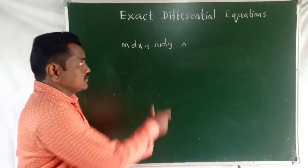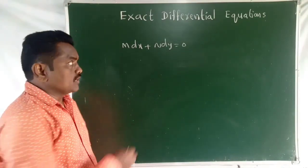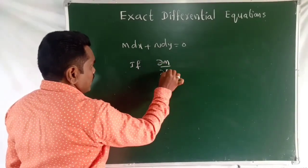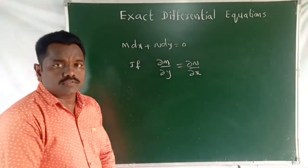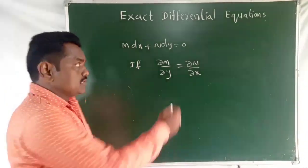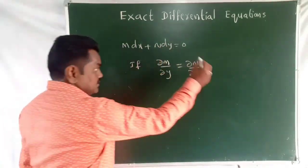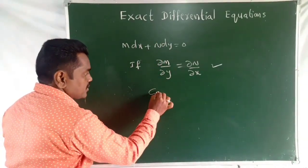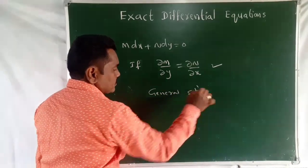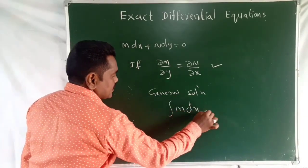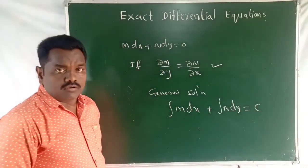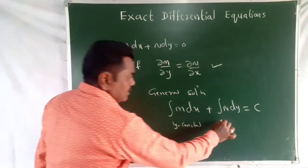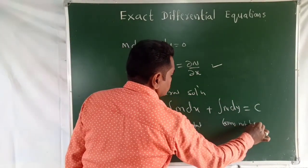If any equation, when comparing with M dx plus N dy, this equation is Exact if ∂M/∂Y is equal to ∂N/∂X. If ∂M/∂Y is equal to ∂N/∂X, then this equation is an Exact Differential Equation. We then solve for the general solution, where Y is held constant.